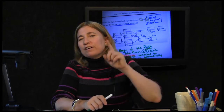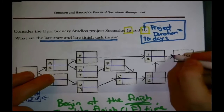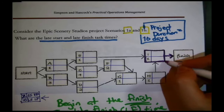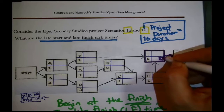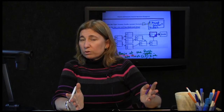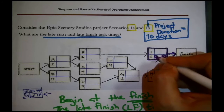If the project duration is your deadline, that means the very latest the ending tasks can finish is on that deadline. Looking at this particular project, there is only one task attached to the finish — that's task I. We now know its late finish time: we declare it as 10 days. The latest we can afford to finish that task is in 10 days. So 10 minus 1 day of work means task I has to start at the latest 9 days from now.